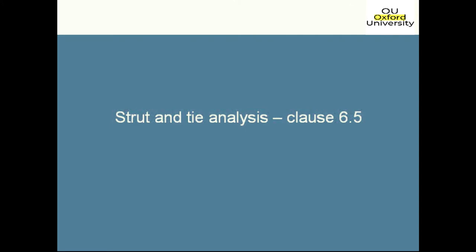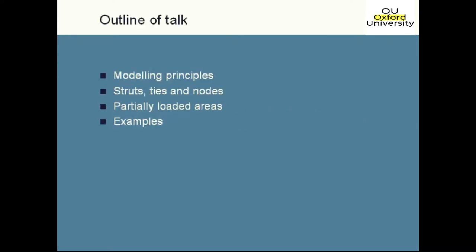We'll carry on now with Strut and Tie analysis, covered in clause 6.5 of Eurocode 2 part 1.1. We'll start with basic modelling rules the Eurocode sets out, then look at detailing rules for struts, ties and nodes, and the limiting stresses for those regions. We'll also cover the partially loaded area rules used for designing bearing areas, and finish with an example showing how you utilize the rules in a typical situation.